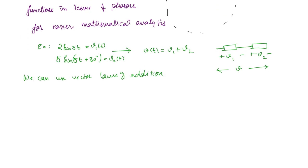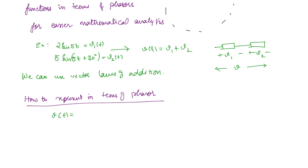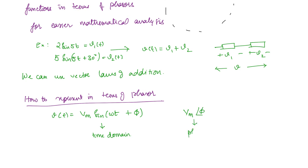We will now see how to represent a sinusoid in terms of a phasor. For this, we take a generalized sinusoidal expression: V(t) = Vm sin(ωt + φ). This is in the time domain. If you want this in terms of a phasor, you write the magnitude — the maximum value Vm — first, and that becomes the magnitude of the phasor, and the angle will be φ. This is the phasor representation.